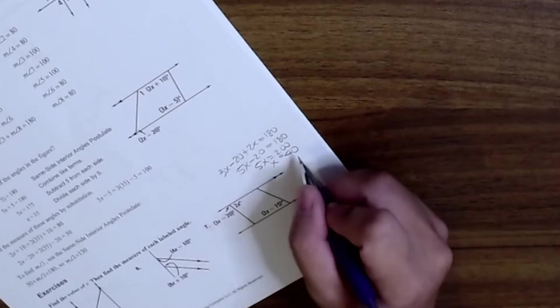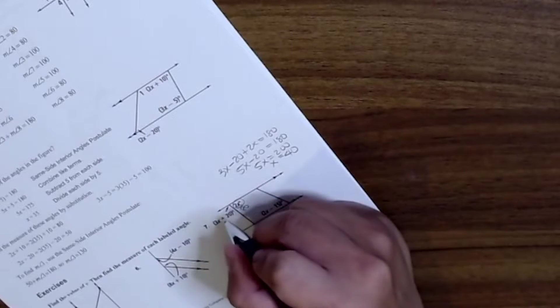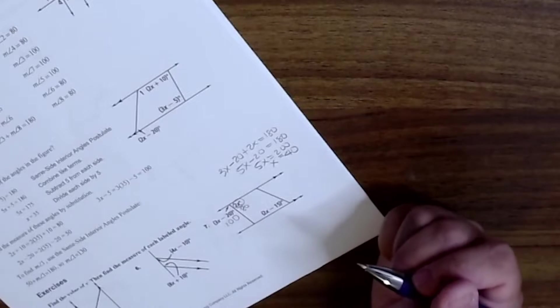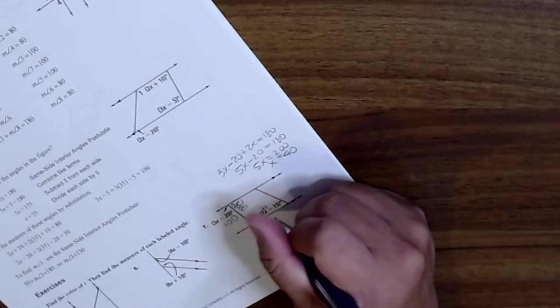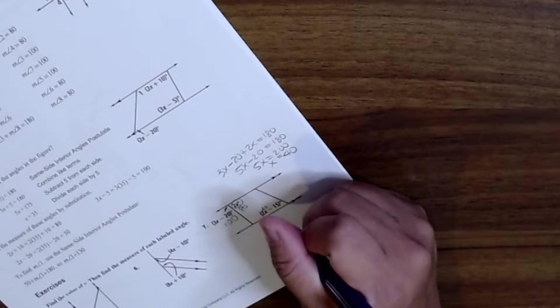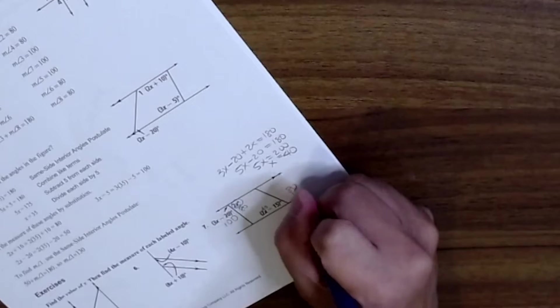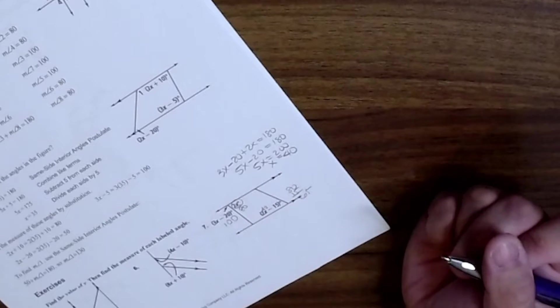That makes 40 here, so that makes this 80. 80 because it's a linear pair that makes this 100, and then x here, so they put 40 here, so 80 minus 15 is 65.